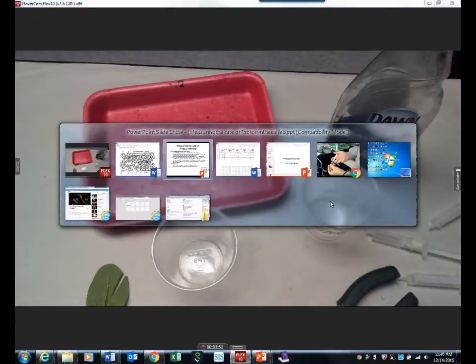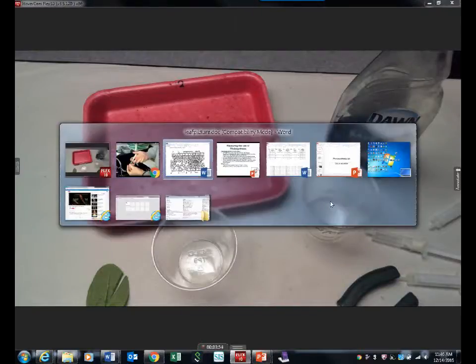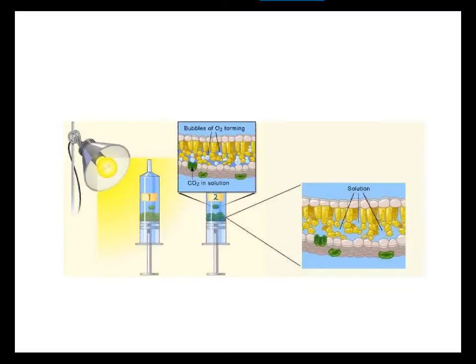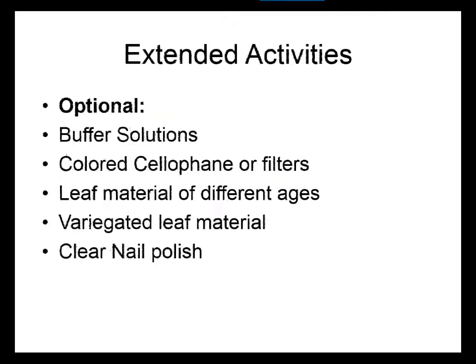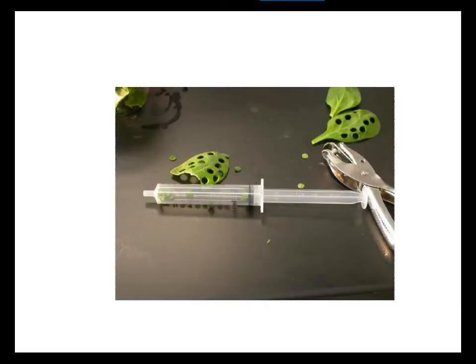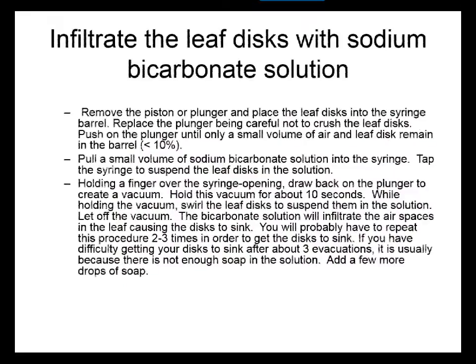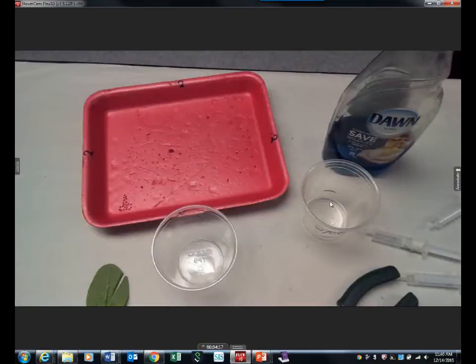Let's close this up — that's the video I'll show you later. So here's the deal: you've got the syringe, you've got liquid soap, you've got all the supplies. But why are we using this syringe? If you look here, you're going to take your little hole-punch discs and put them in that syringe. Let's go back to the camera so you can see.